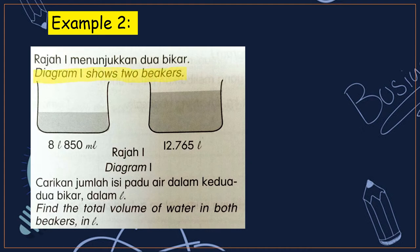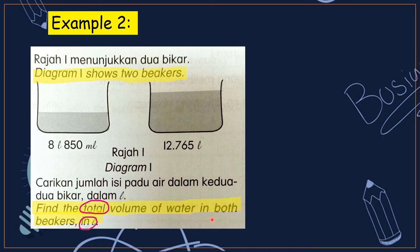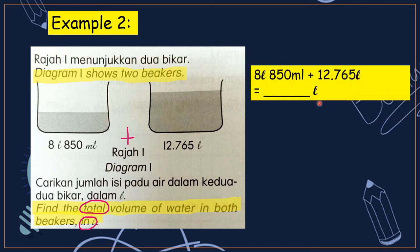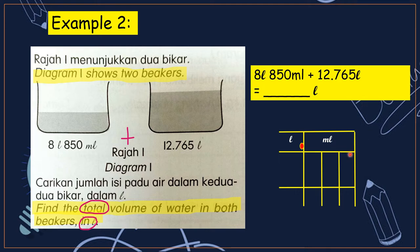Example 2. Diagram 1 shows 2 beakers with water inside. The first one is 8 liters 850 ml, and the second one is 12.765 liters. The question is asking: find the total volume of water in both beakers in liters. The keywords are 'total' and 'liter'. Total means addition, so we add up these two volumes of liquid and the final answer is in liter, with a point.